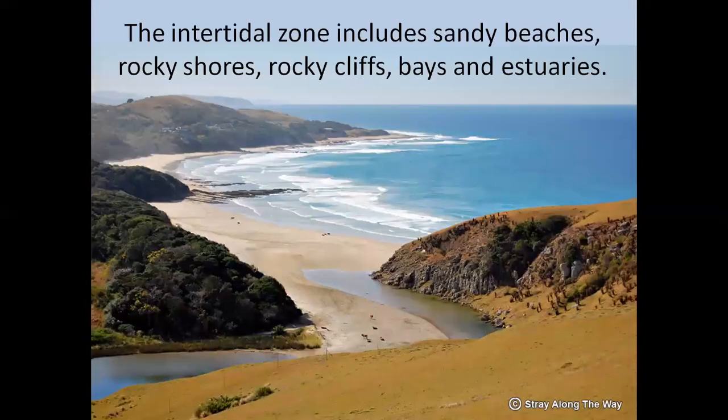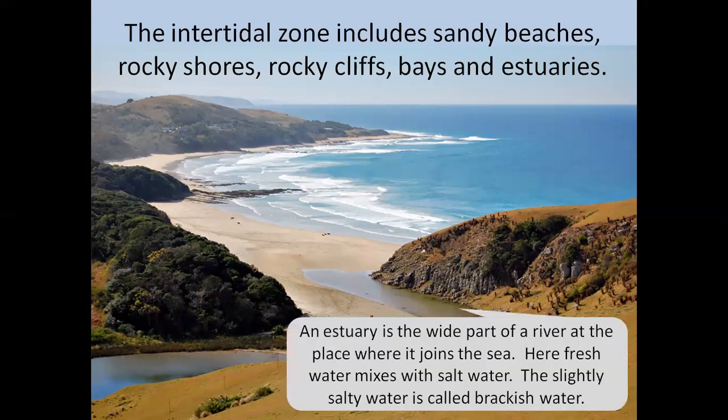The intertidal zone includes sandy beaches, rocky shores, rocky cliffs, bays, and estuaries. An estuary is the wide part of a river at the place where it joins the sea. Here, fresh water mixes with salt water. The slightly salty water is called brackish water.